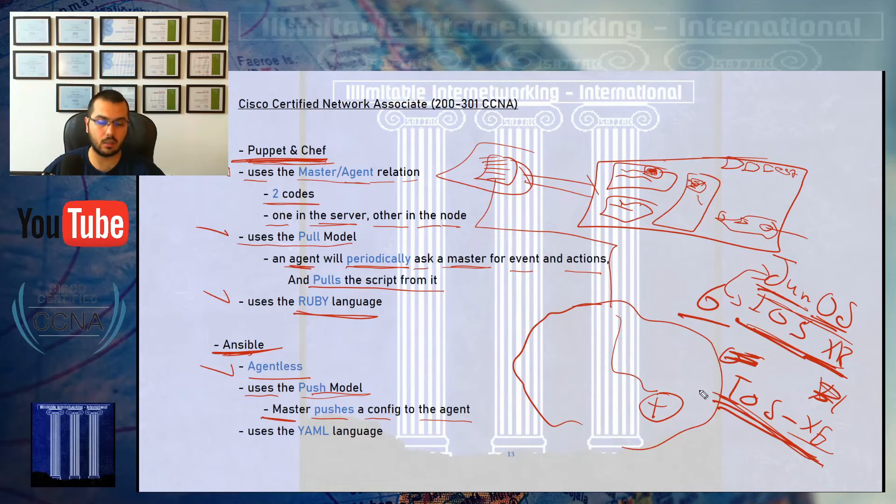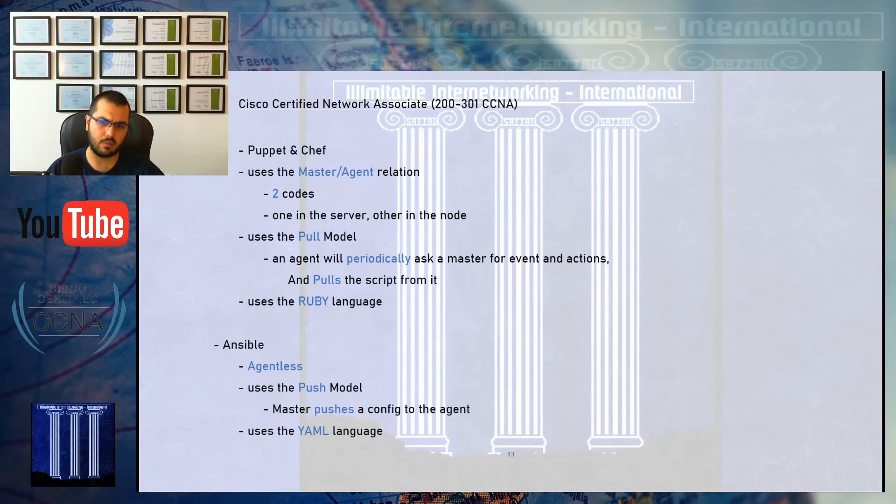For Ansible, it's agentless, uses the push model, and lastly uses the YAML language. These are the differences between Puppet, Chef, and Ansible. There's a fourth type called Salt Stack, but it's not mentioned in our course. What you need to know for the exam are Puppet, Chef, and Ansible. What I hope for you to work with or study in the future is Ansible, because it's much simpler and better. I hope this is good and clear for those three applications we've talked about and differentiated in this video. In the upcoming video, we'll talk about one last thing before we finish chapter 7. Thanks for watching, and I hope to see you in the final video. Goodbye.